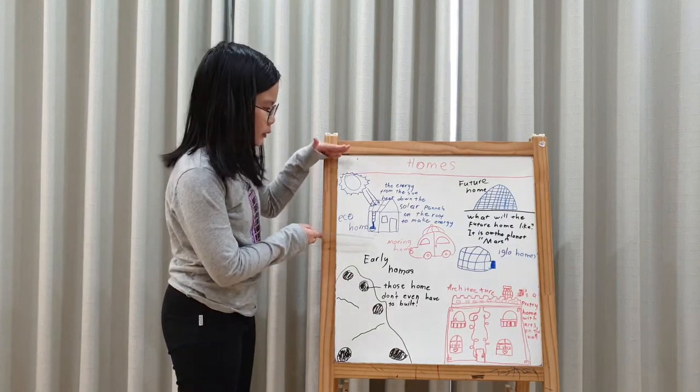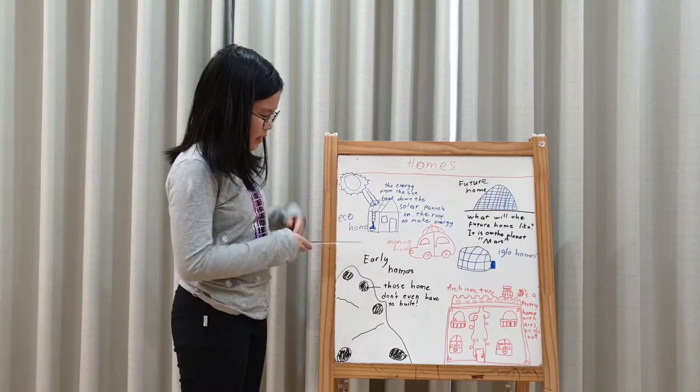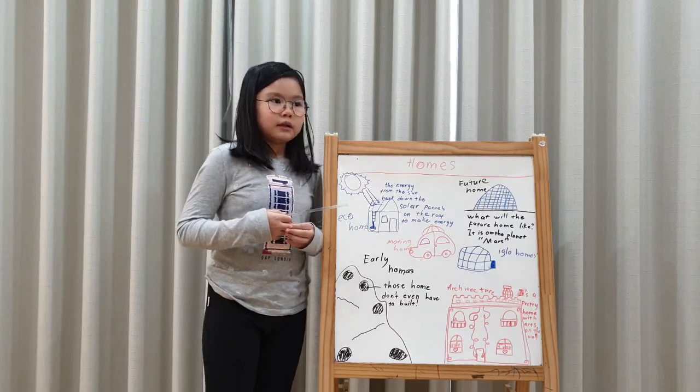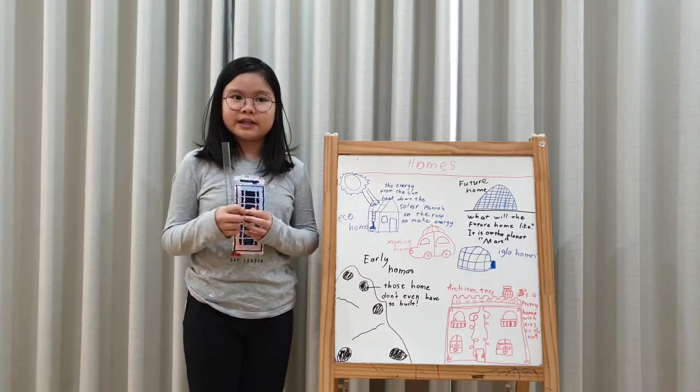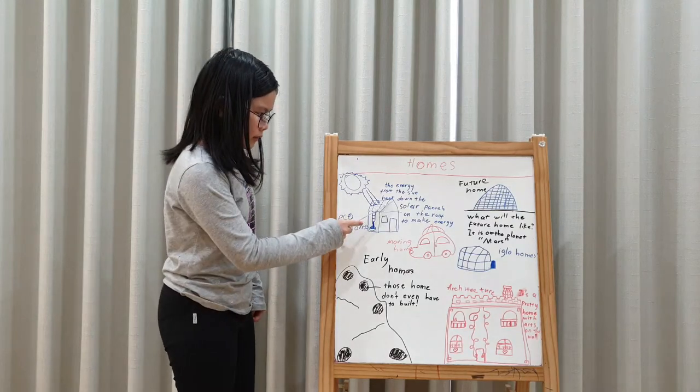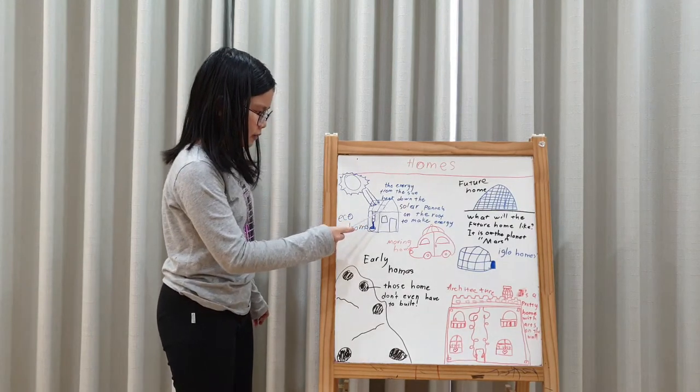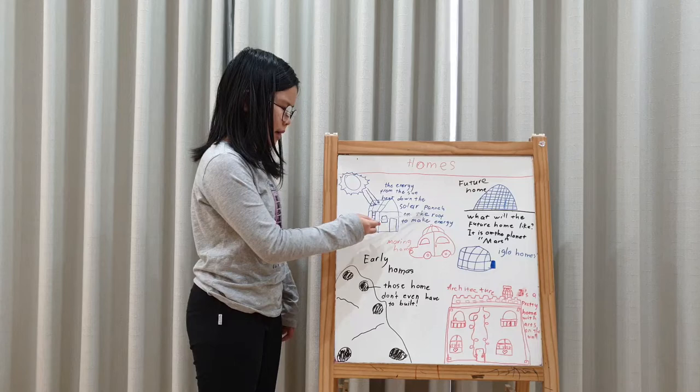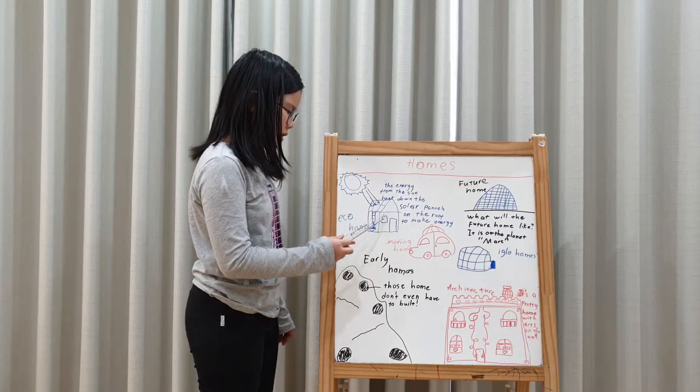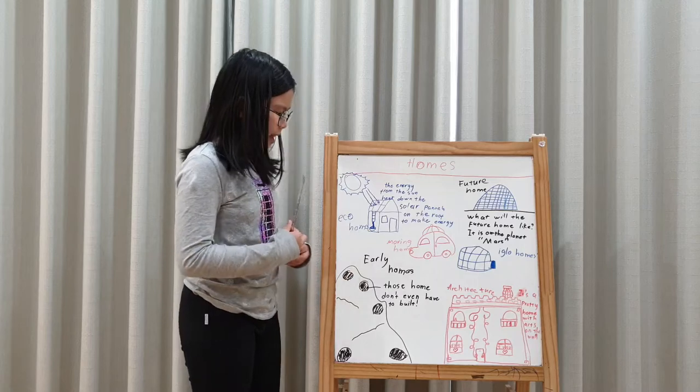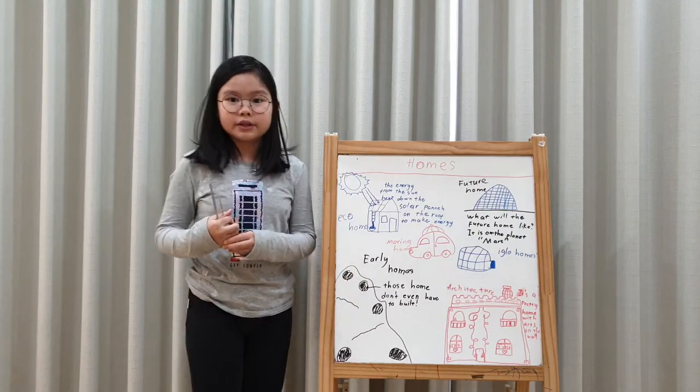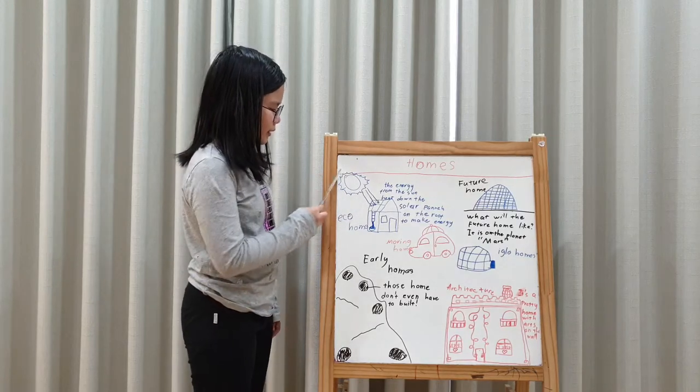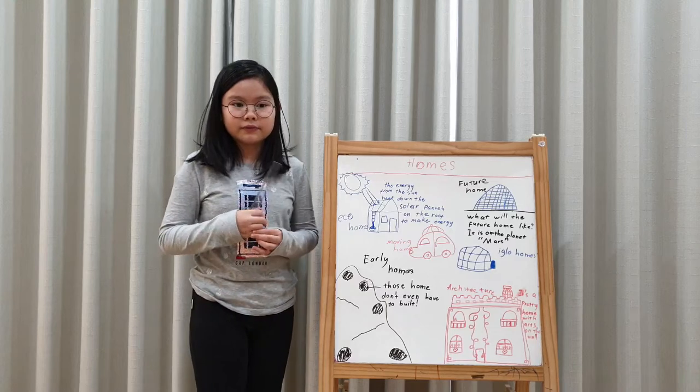Our first today house I want to learn with you is about eco houses. Eco houses use less energy than us. They have solar panels on the roof. The energy from the sun heats down the solar panels on the roof to make energy. You could get an eco house in the future.